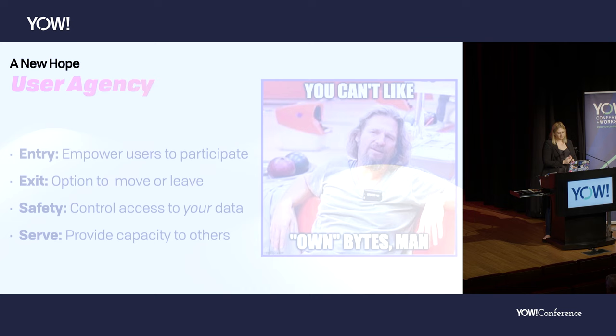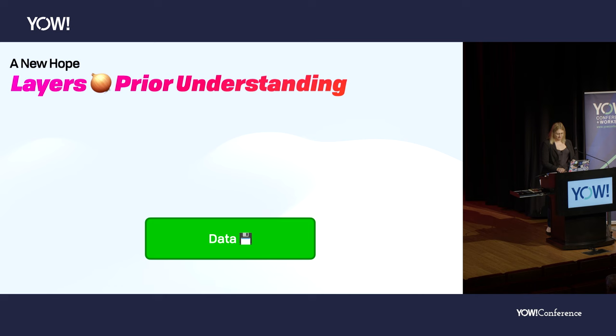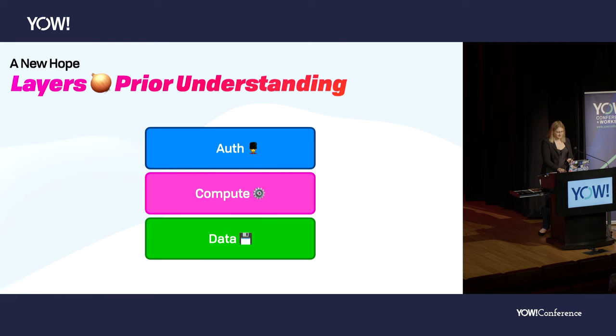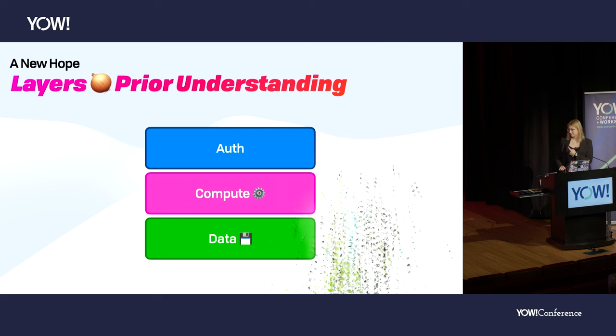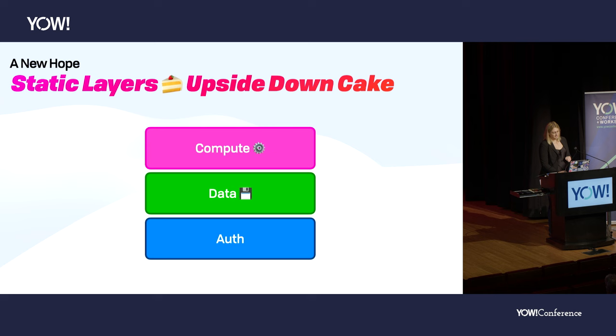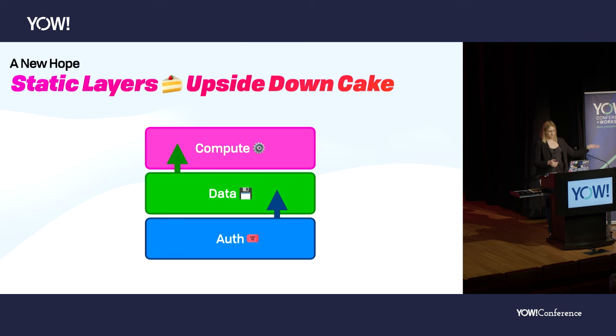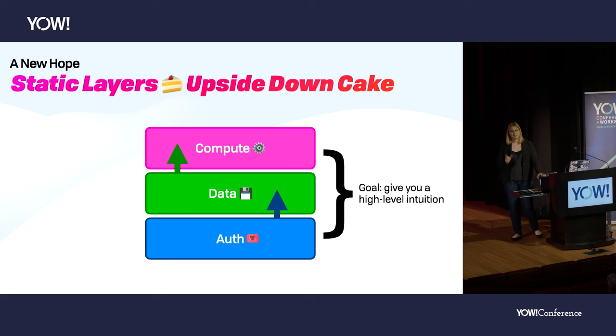When we got started, we thought we knew how this works: data at the bottom, data feeds into compute, and on top you slap on some auth. That fell apart basically immediately. We had to put auth at the bottom, because if your data is moving around, your access control also needs to move around with the data. Auth supports the data layer, and data supports the compute layer. My goal today is to give you a high-level intuition of these three layers.